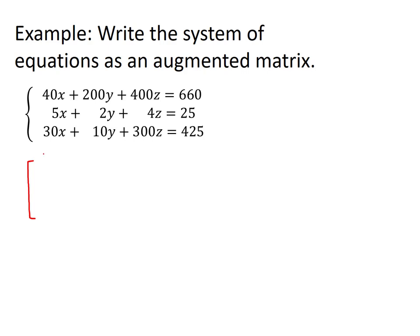The coefficients of the x term go in the first column, so that will be 40, 5, and 30 respectively.